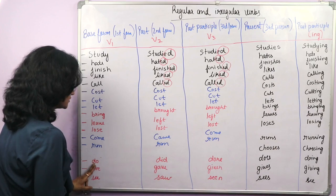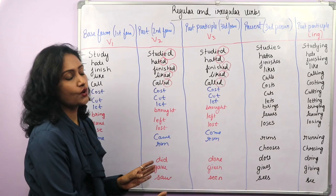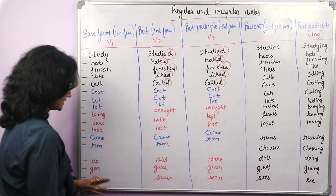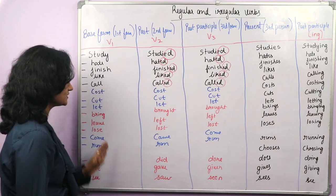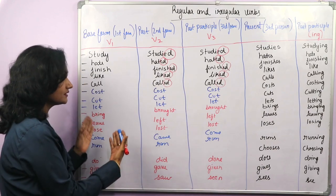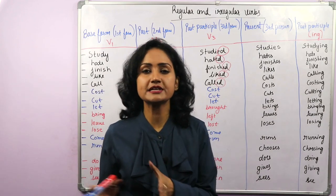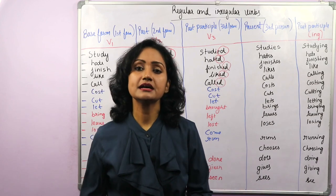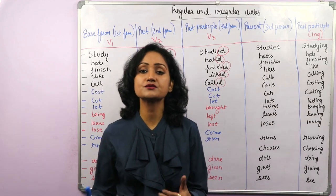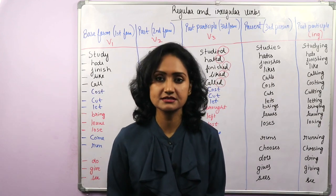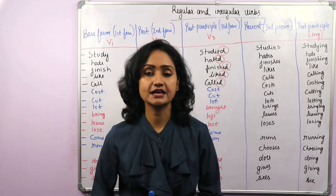Fourth: do, did, done; give, gave, given; see, saw, seen — all three forms V1, V2, V3 are different. You can learn irregular verbs by grouping them like this. There is no specific way to memorize them — it can only be done through practice. Regular verbs are easy, but for irregular verbs you need lots and lots of practice.